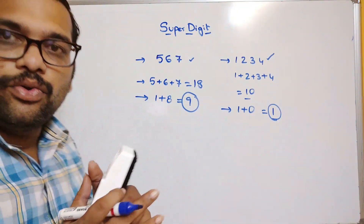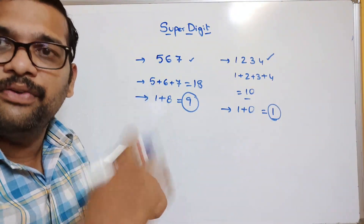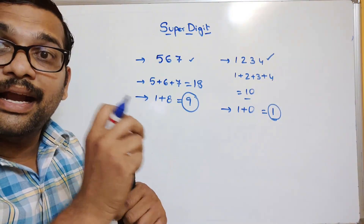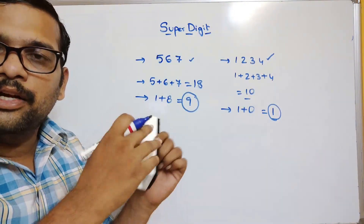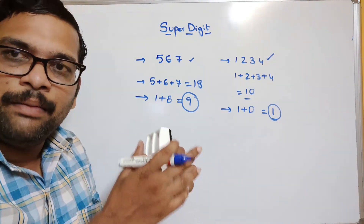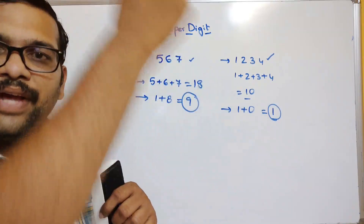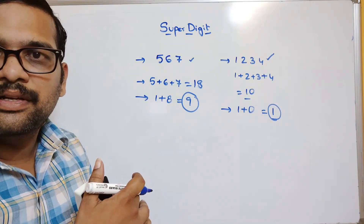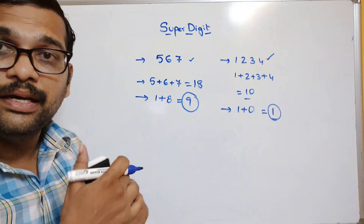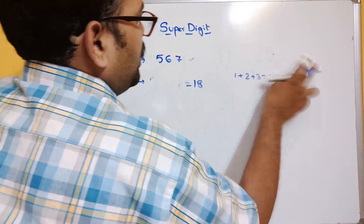To find this super digit, first we need to find the sum of individual digits, then check whether the sum is greater than or equal to 10, because two-digit numbers start at 10. If so, we repeat the same process. We need to use nested loops for this.